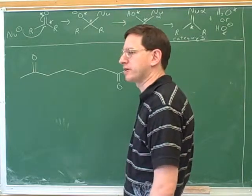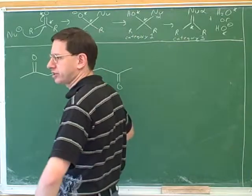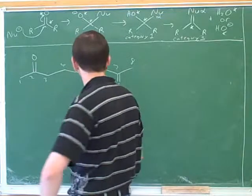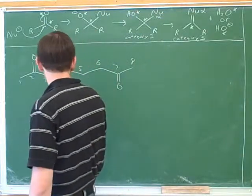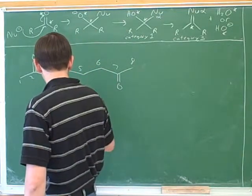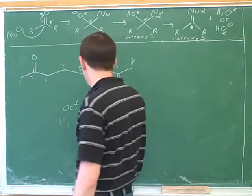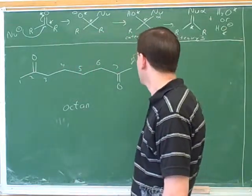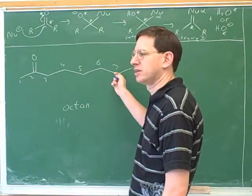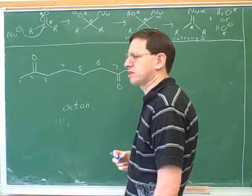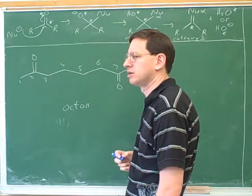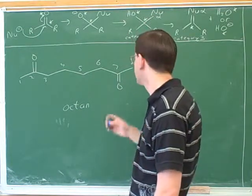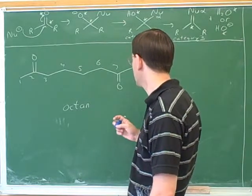Eight. So we should number the parent chain. We can number it from either direction because it's symmetrical. Oct for eight. There's no double bonds, so it's octane, not octene. Now, what type of functional group do we have here? A ketone. Do you remember what's the suffix for ketones? One? One. That's right. Not too hard a suffix to remember. This is the same three letters that end with the word ketone, O-N-E.